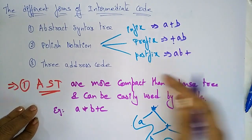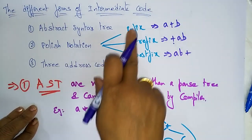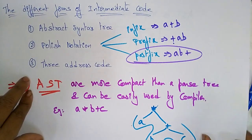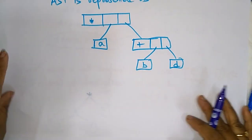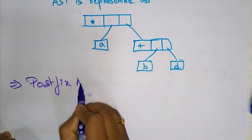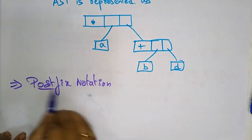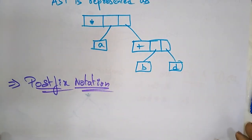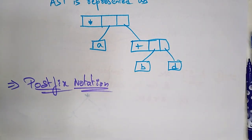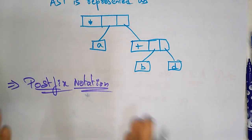In postfix, a plus b is represented as a b plus. This is how you represent polish notation in infix, prefix, and postfix forms. Now let's focus on postfix notation in detail. The postfix notation is a useful form of intermediate code. If the given language is represented in the form of expressions, then postfix is useful for intermediate code.